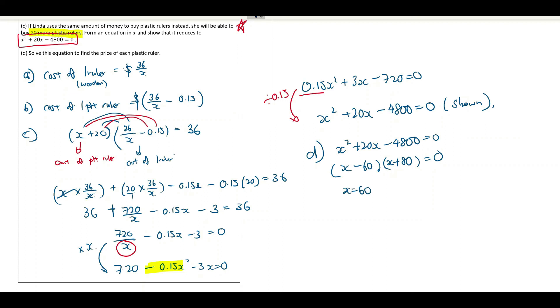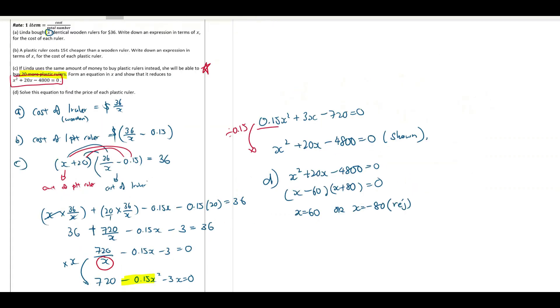X equals to 60 or X equals to negative 80. The one that has negative 80 got to reject because X is the number of wooden rulers.